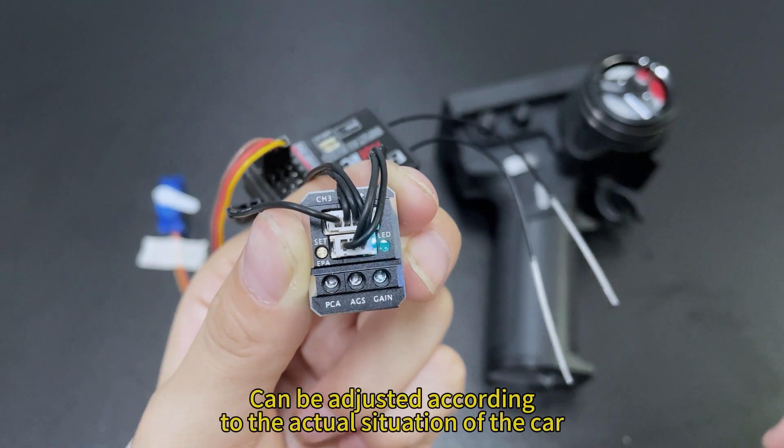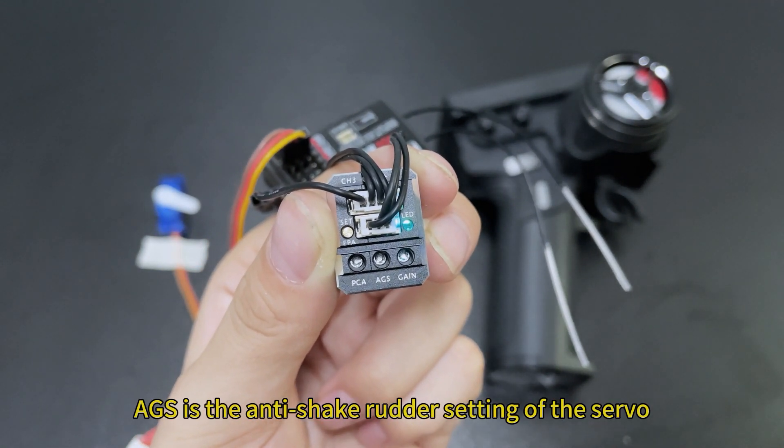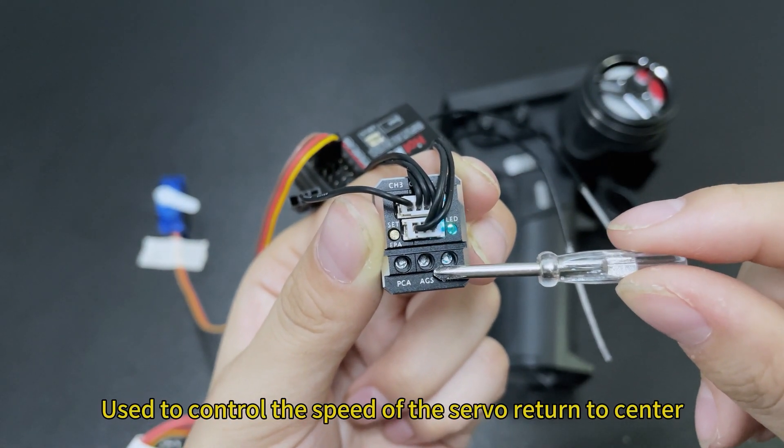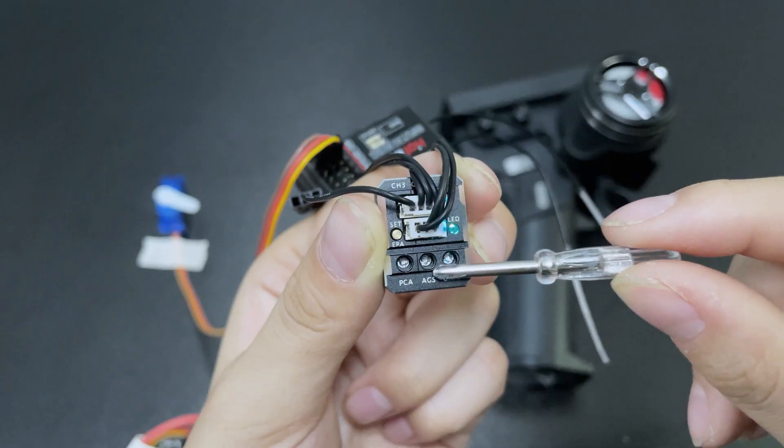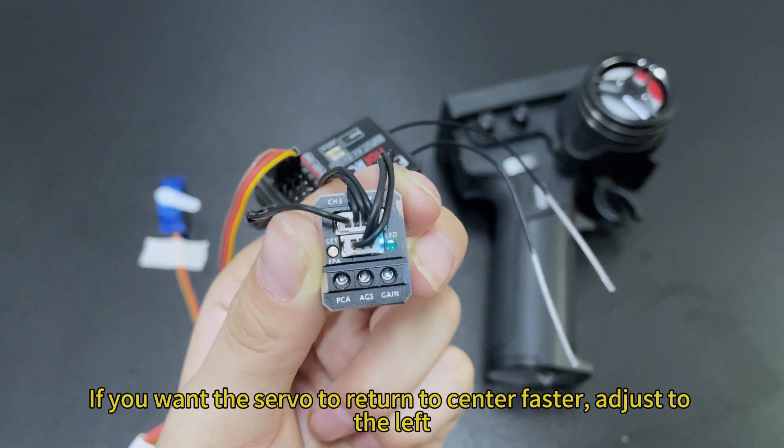AGS is the anti-shake rudder setting of the servo. Used to control the speed of the servo return to center. If you want the servo to return to center faster, adjust to the left. If you want to return to the center more slowly, adjust to the right.